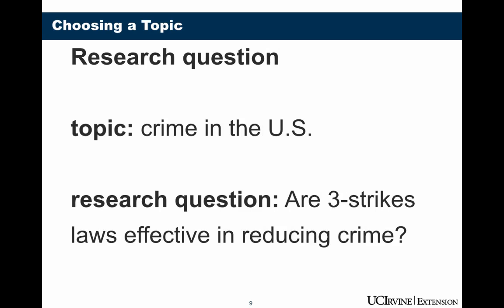Let's look at another topic: crime in the U.S. Again, this is a very broad topic, and you wouldn't know what to write about if your teacher just gave you that topic. So we come up with a research question. This example asks: Are three strikes laws effective in reducing crime? A three strikes law is a law in the American legal system — it means that if you are convicted of three serious crimes, you go to jail or prison for life. This is a very complex topic that makes a good research question, and you can see it's much more specific than the general topic we started with.